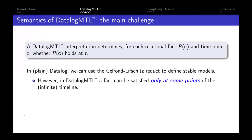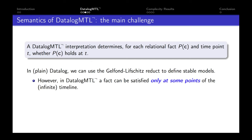When defining the semantics, the key concept is the concept of an interpretation, which says for each relational fact and time point T, whether the fact holds at time T. When defining stable models in plain Datalog, a standard approach is the Gelfond-Lifschitz reduct, which transforms a program and dataset given a candidate interpretation into a positive program. However, this transformation cannot be applied directly to DatalogMTL because facts can be satisfied at some points on the timeline but not at others, so it's not clear how to perform the reduct on a DatalogMTL program.